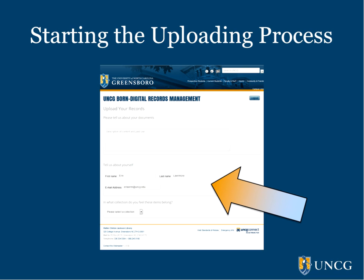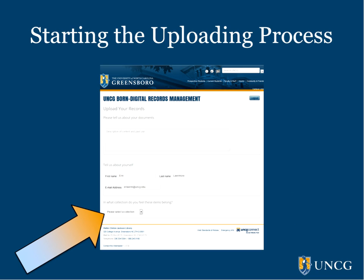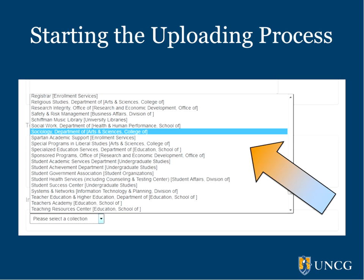Next, confirm that your name and email address are correct. This should be auto-populated using your UNCG ID. Then let us know from which department or unit you're transferring the records by selecting the appropriate name from the drop-down menu. If you don't see your department name in the list and your department has undergone a recent name change, please check for your former name, and when you finish transferring records, email us and let us know. We'll update the name for your future transfers.